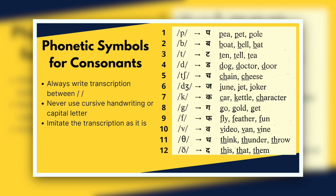There's a problem I have seen in students — they call the varnmala incorrectly. The correct pronunciation is not 'khay gay ghay,' it is 'kha, kha, gha, gha.' To make 'khaa,' you combine 'kha' and the sound 'aa.' So if you are reading the first symbol as 'phay,' that is wrong — it is 'pha,' not 'phay.' The second symbol is B, as in boat, bell, bat. The third is T, as in ten, tell, tea. The fourth is D, as in dog, doctor, door.